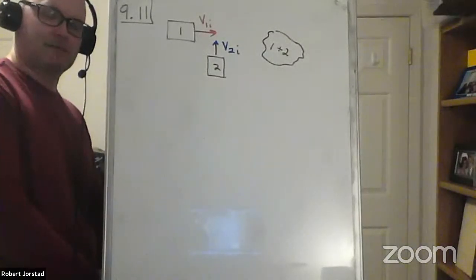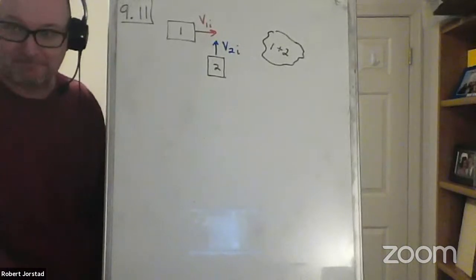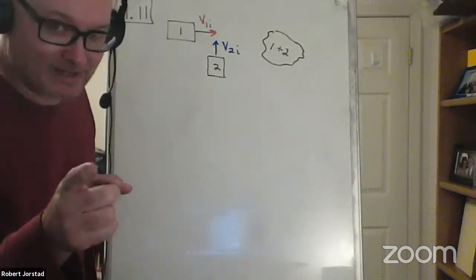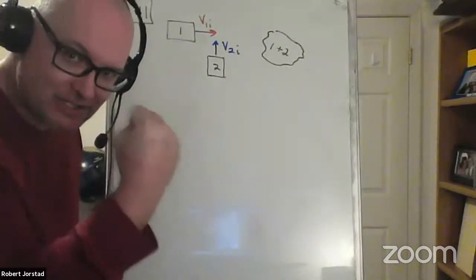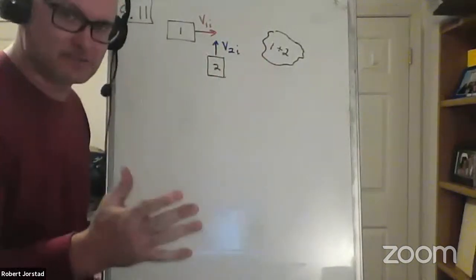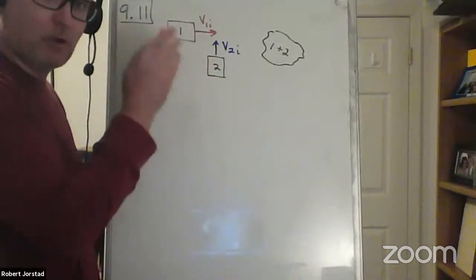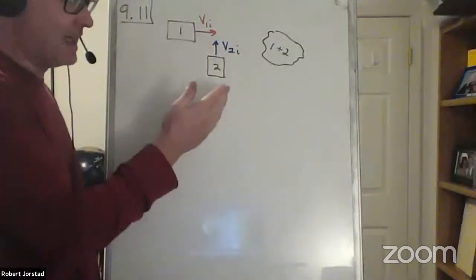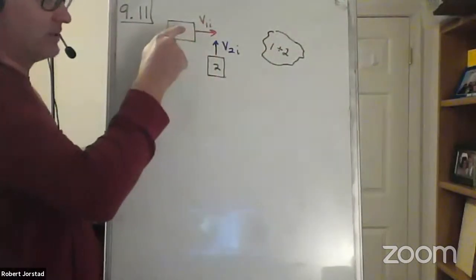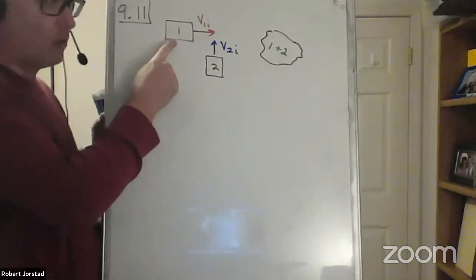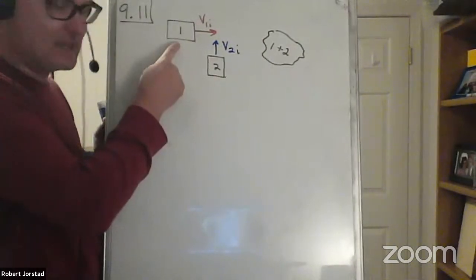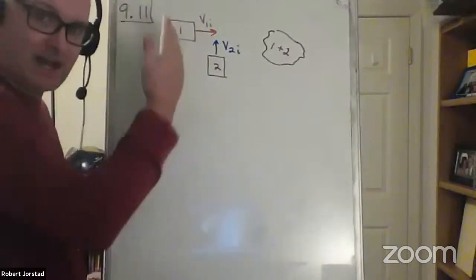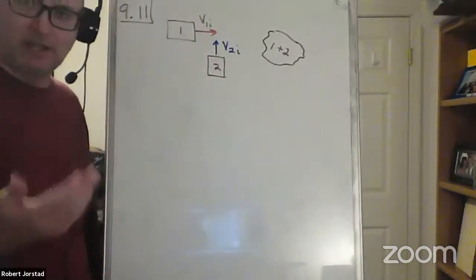Doesn't it depend on the masses? It depends on the momentum. Whichever one's momentum is bigger — it's not just the mass, not just the speeds, but the mass-speed combination. It's momentum which determines who wins. The object which has more initial momentum will dominate and the angle will be closer to that axis. So if the truck has more mass, but the car was going 100 miles per hour and the truck was going 10 miles per hour, the car would dominate.